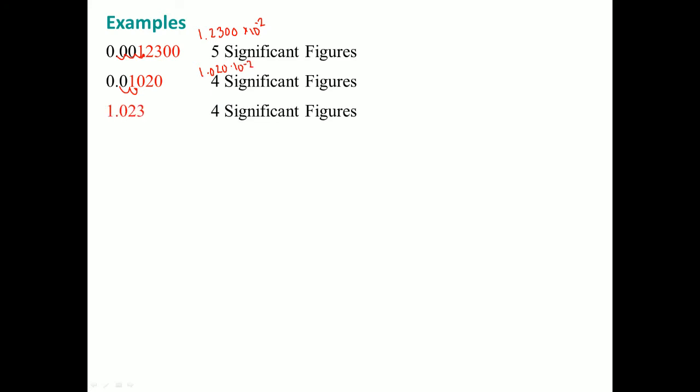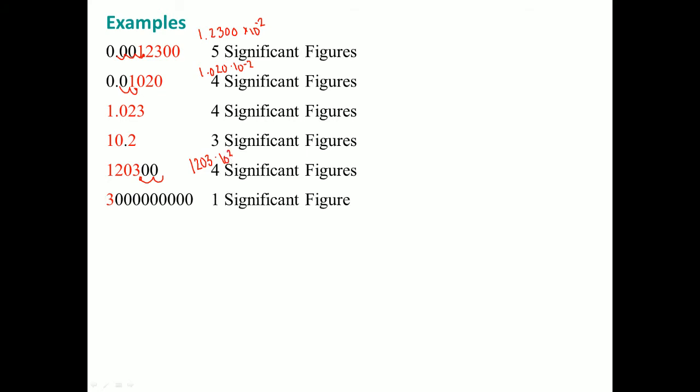This has four significant digits because you can write this as 1.023 times ten to the two. This has one significant digit because you can write this as 3 times ten to the nine.